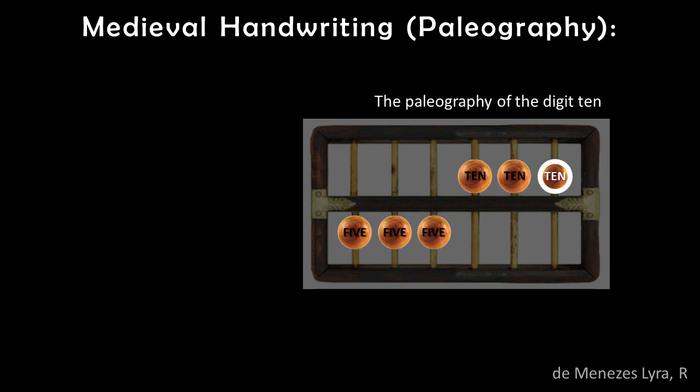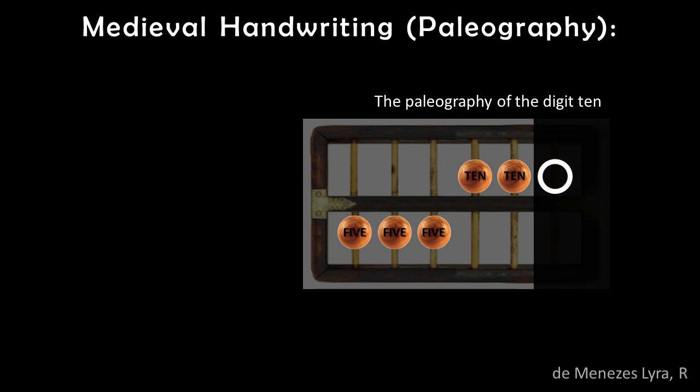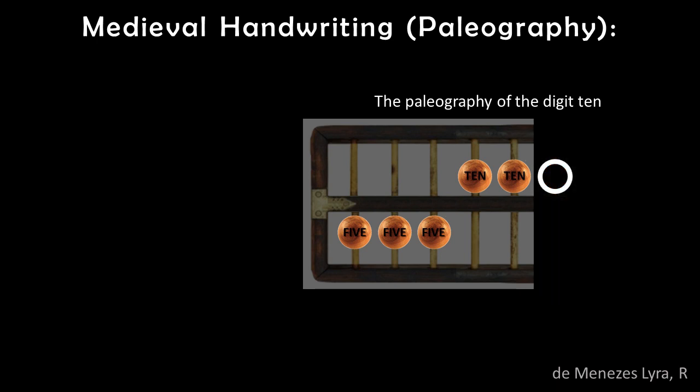This bead has a value of 10. This is the paleographic way the digit 10 is written — it is written by circling a bead with a value of 10.